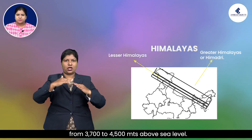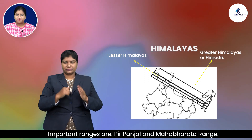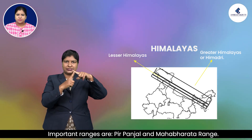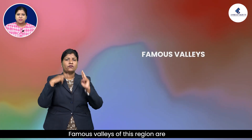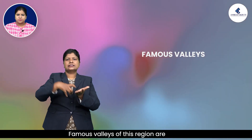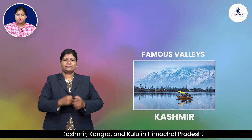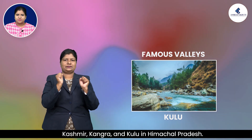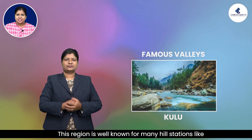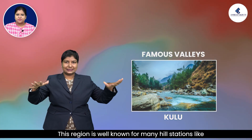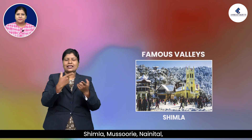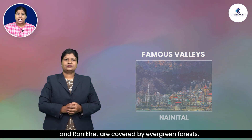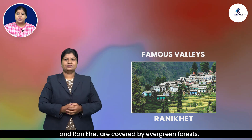These ranges are mainly composed of highly compressed rocks. The height ranges from 3,700 to 4,500 meters above sea level. Important ranges are Pirpanjal and Mahabharata range. Famous valleys of this region are Kashmir, Kangra, and Kullu in Himachal Pradesh. This region is well known for many hill stations like Shimla, Mussoorie, Nainital, and Ranikhet, and is covered by evergreen forests.